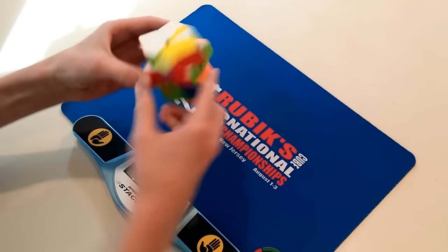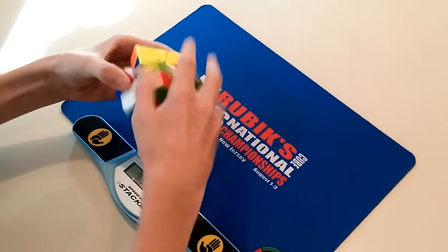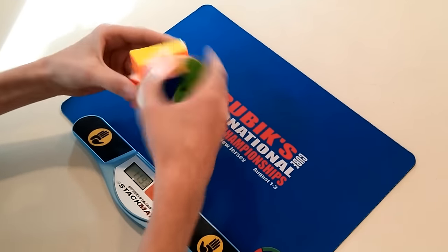If you're interested in buying the Qiyi square one, a link to it on thecubicle.us is in the description. Big thanks to them for letting me test my new main. So that's about it, thanks for watching, and I'll see you on my next video.